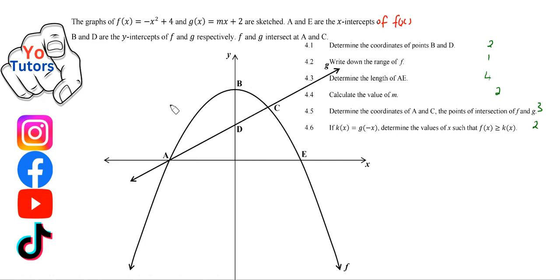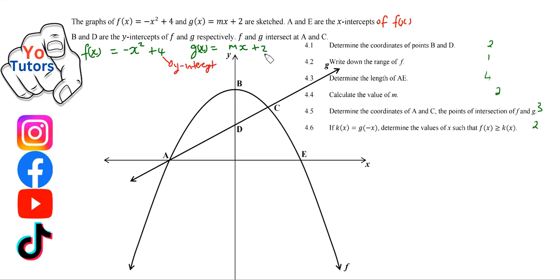The first question asks us to determine the coordinates of B and D. We have f(x) = -x² + 4 and g(x) = mx + 2. The values 4 and 2 represent vertical shifts, which are also the y-intercepts. So B is (0, 4) and D is (0, 2).